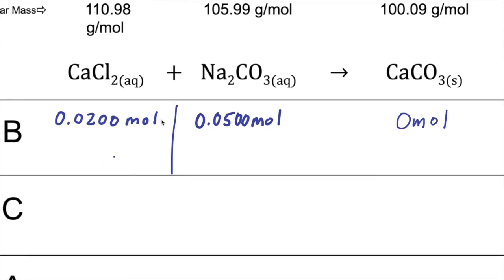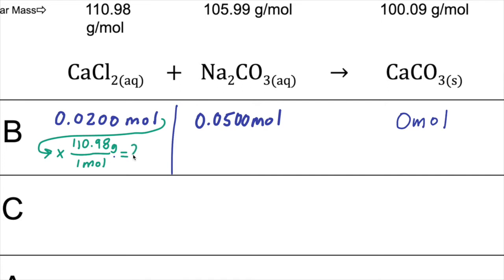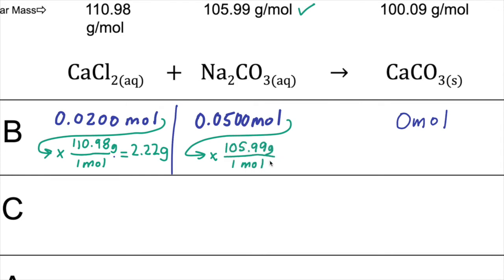Taking 0.0200 moles of CaCl₂ and multiplying by its molar mass as a conversion factor — 110.98 grams per mole — moles cancel and we end up in grams. Rounding to three significant figures gives 2.22 grams of calcium chloride. For sodium carbonate, multiplying the mole amount by its molar mass gives 5.30 grams.